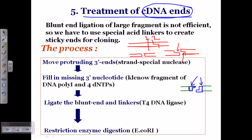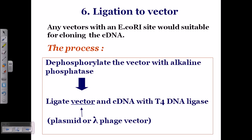T4 DNA ligase is used to seal the nick and produce the recombinant DNA, which is then inserted into host cells. For ligation, the vector is dephosphorylated with alkaline phosphatase before ligation. Any vector with an EcoRI site is suitable. The 5' phosphates at the ends of the cDNA must be dephosphorylated with alkaline phosphatase before ligation into the vector. The vector used can be a phage vector, cosmid, bacterial artificial chromosome (BAC), or yeast artificial chromosome (YAC), which will be discussed later.